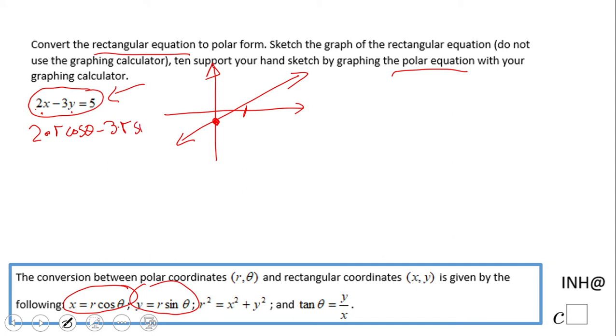r sine of theta equals 5. So just replace x and y with those two forms. Now we can factor out the r, and